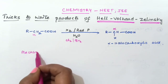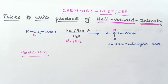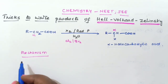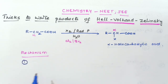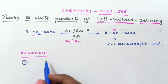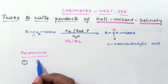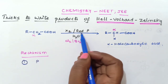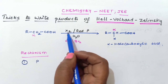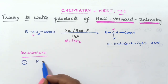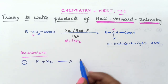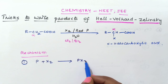Now let us study the mechanism for this reaction. In the first step, red phosphorus reacts with the halogen (X₂) to form PX₃.